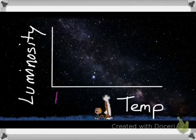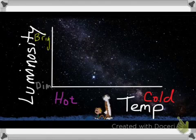You put hot on the left side of the x-axis and cold on the right side, and you put dim on the bottom of the y-axis and bright on the top.